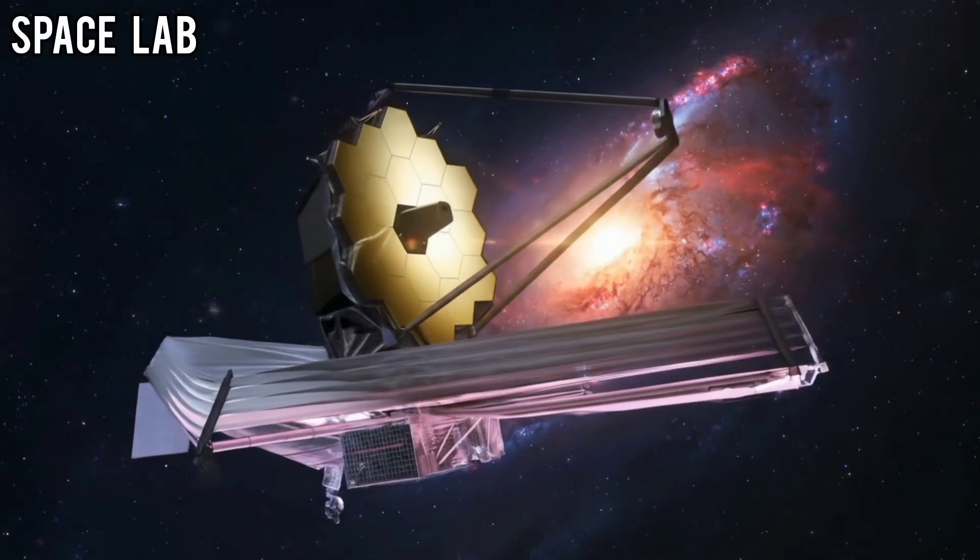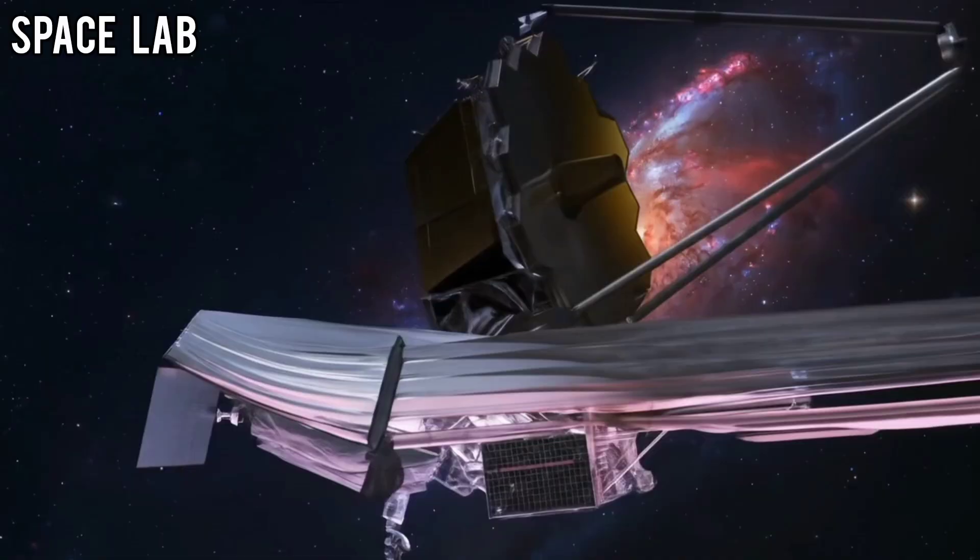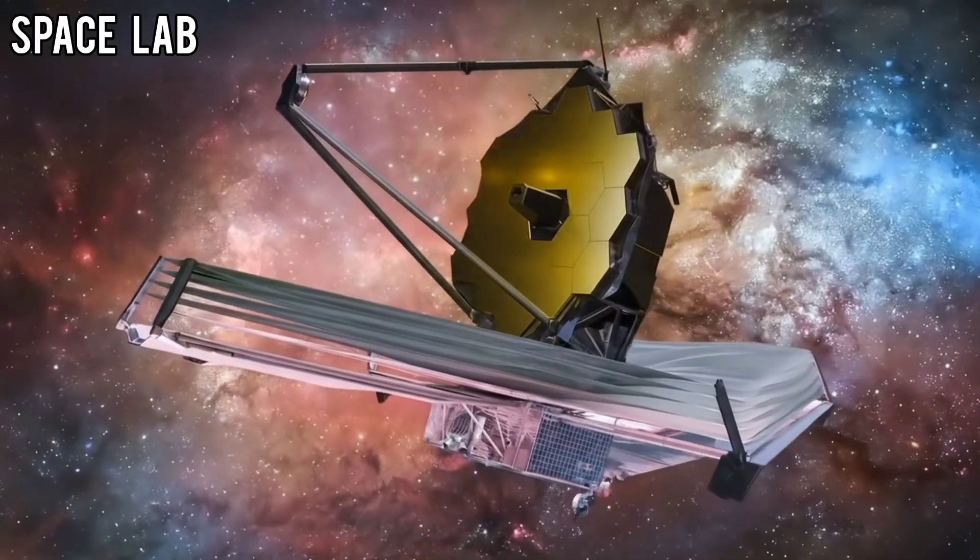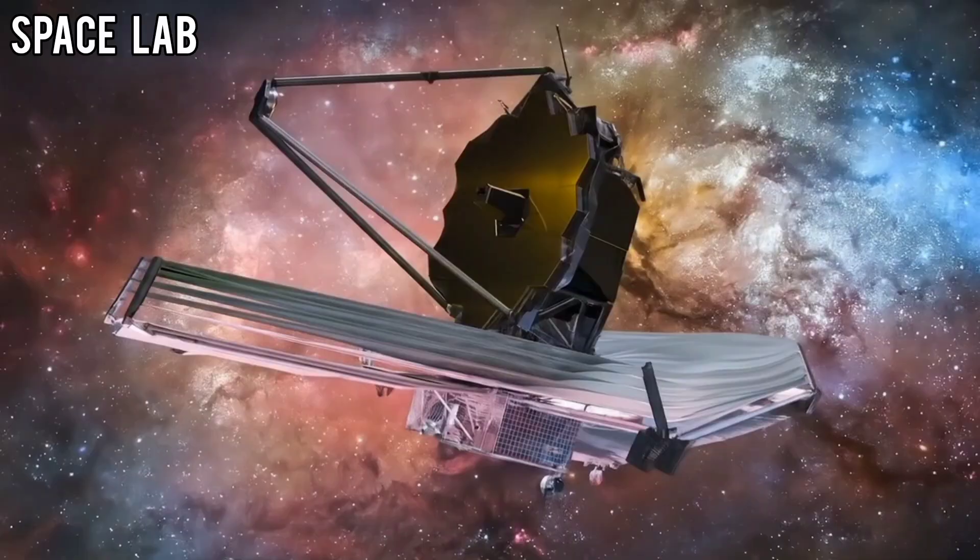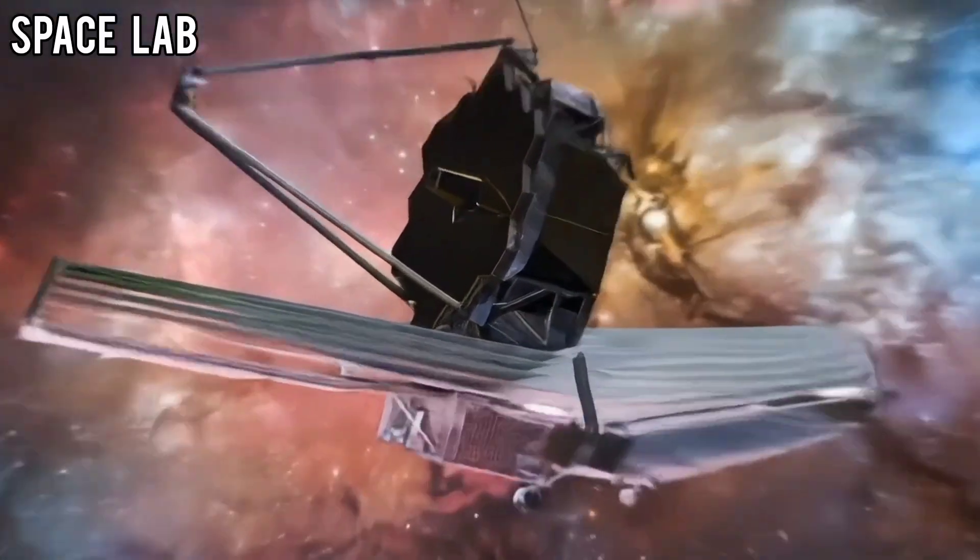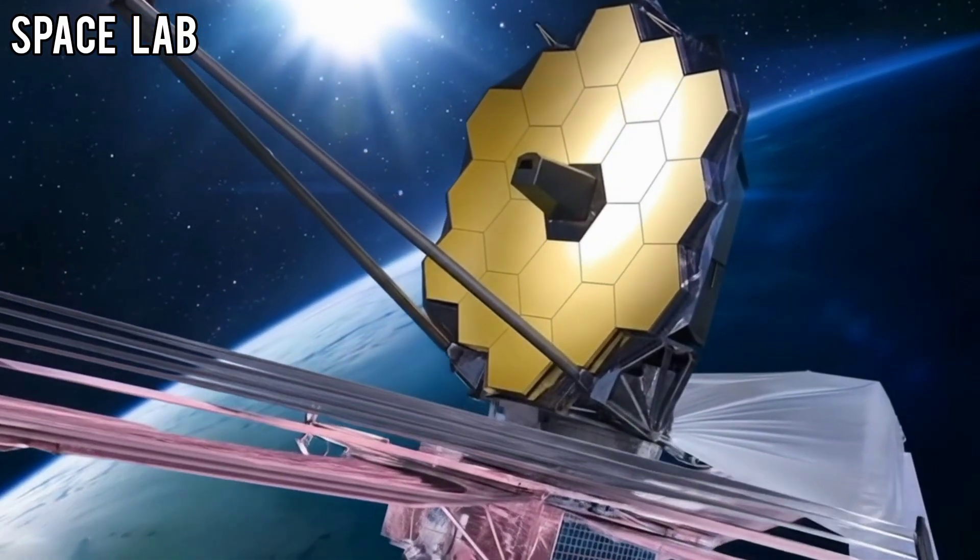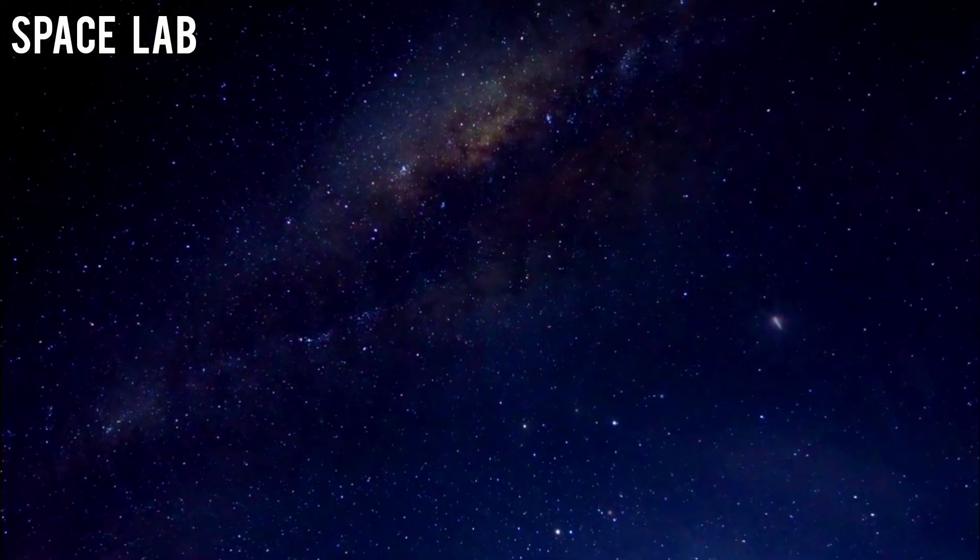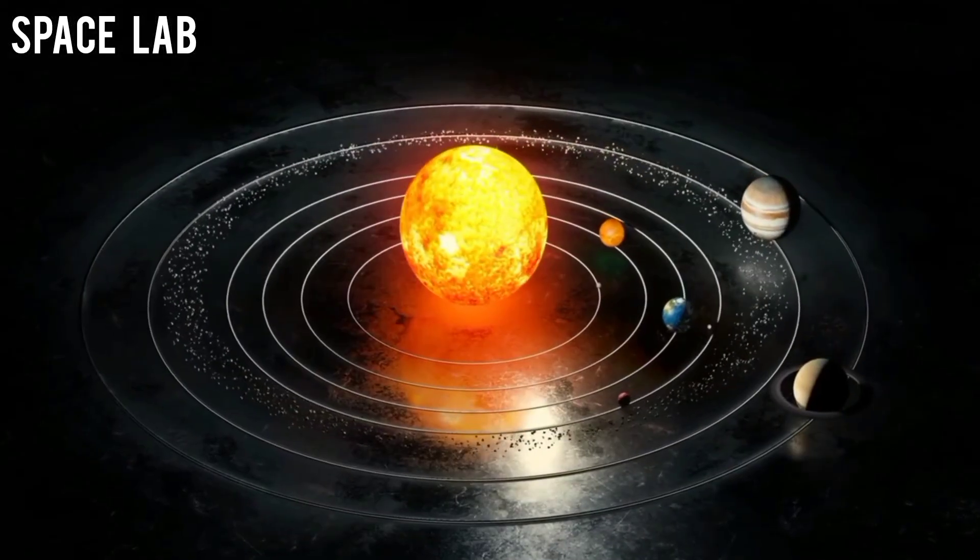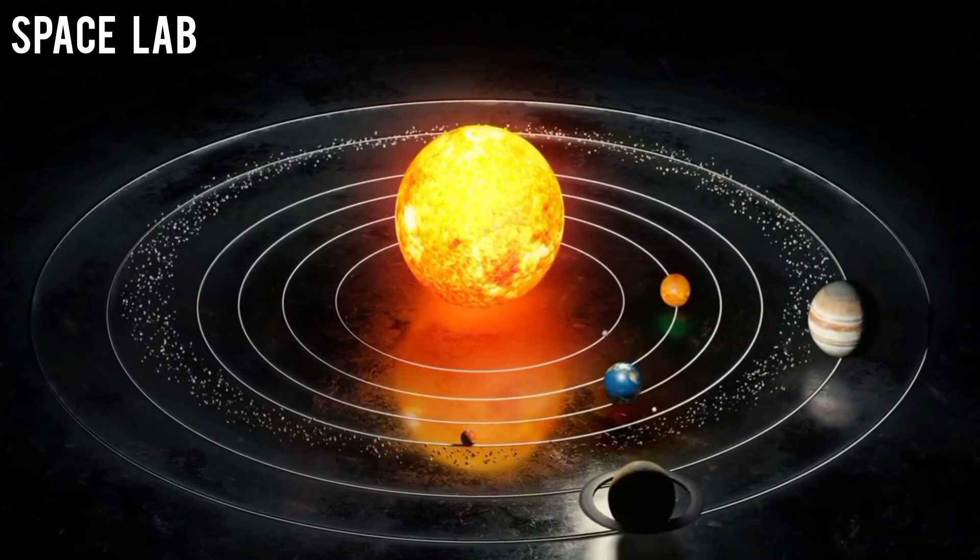The James Webb Space Telescope, JWST, has already changed how humanity sees the cosmos. With its massive gold-coated mirrors and infrared vision, it has looked deeper into space and further back in time than any telescope ever before. It has shown us galaxies as they were billions of years ago, revealed stars being born inside clouds of dust, and even glimpsed the atmospheres of distant exoplanets.